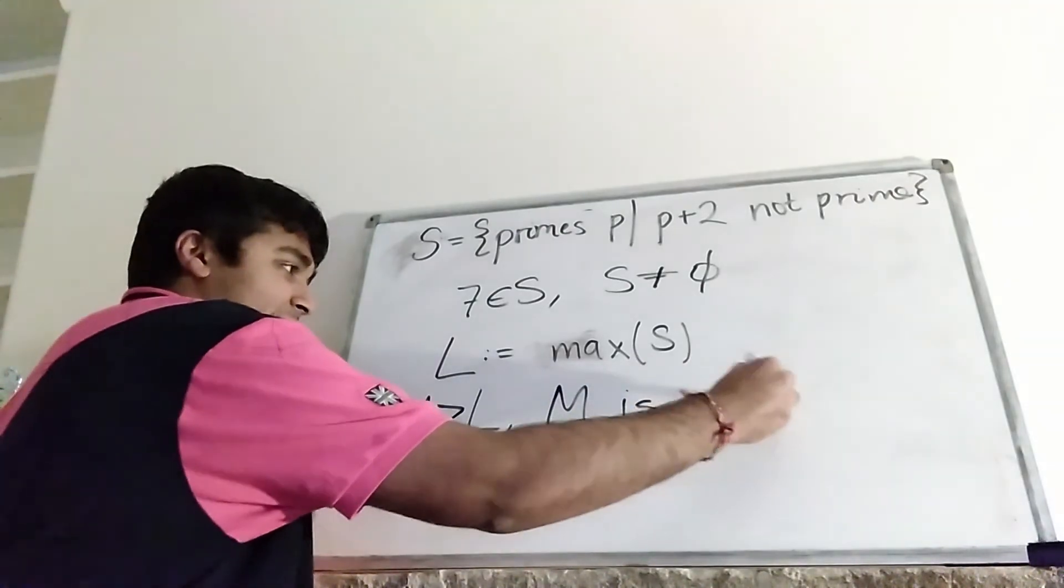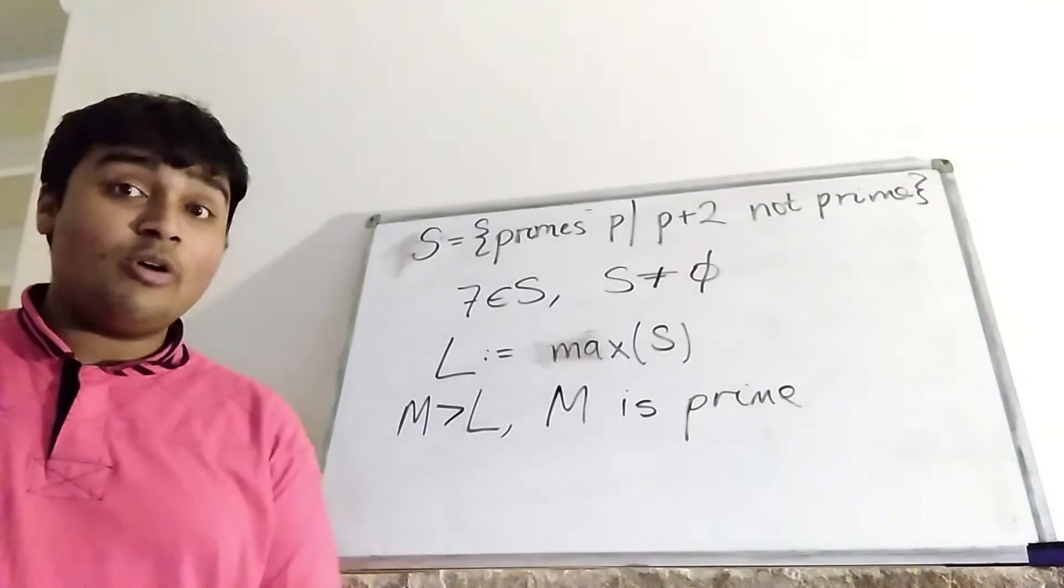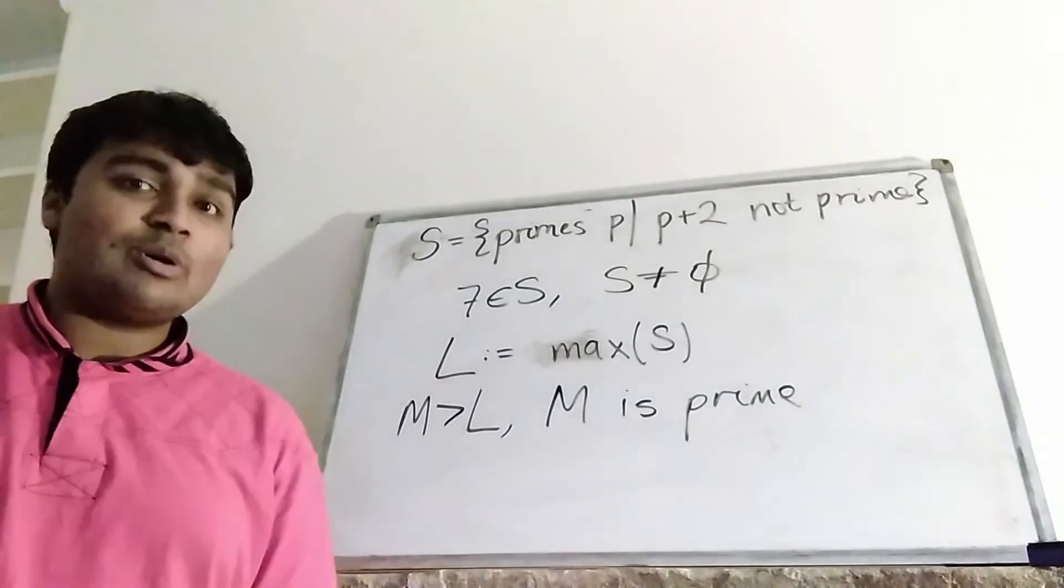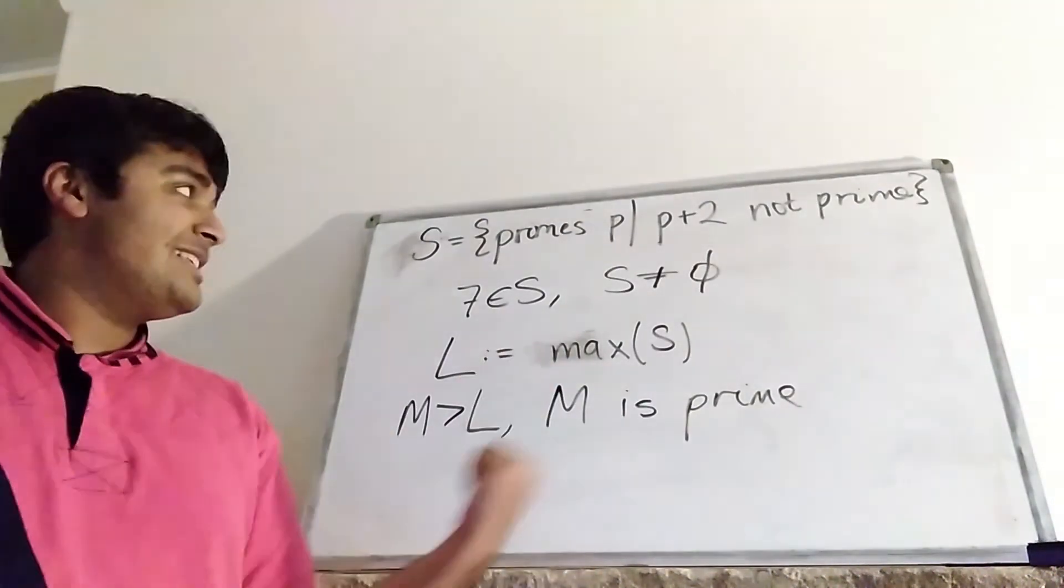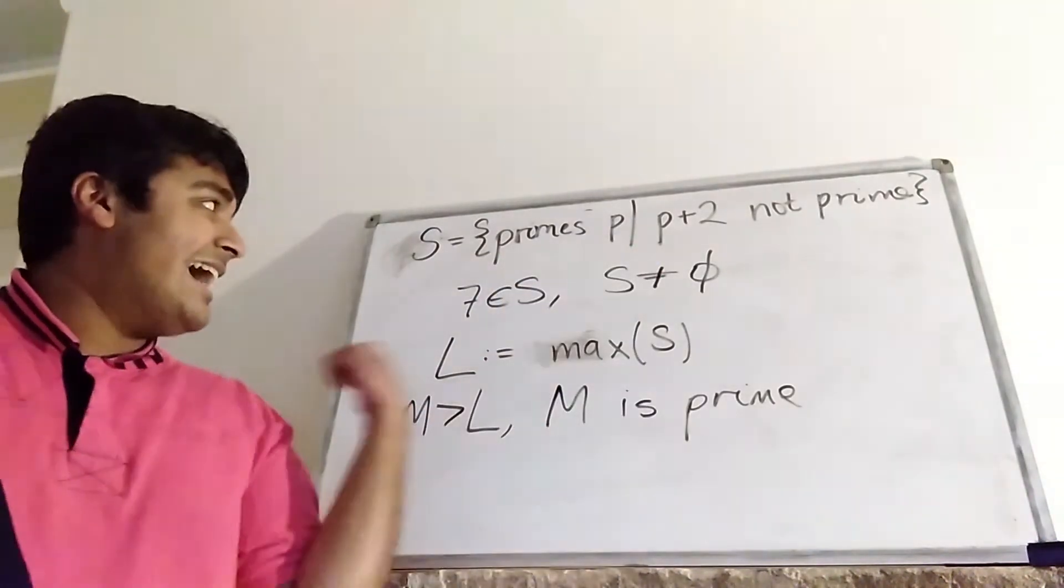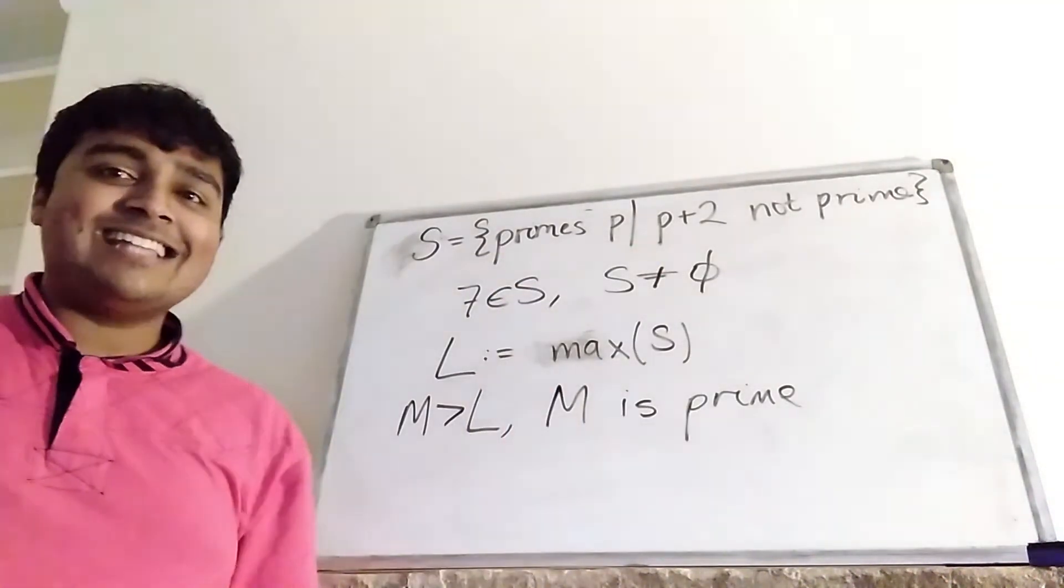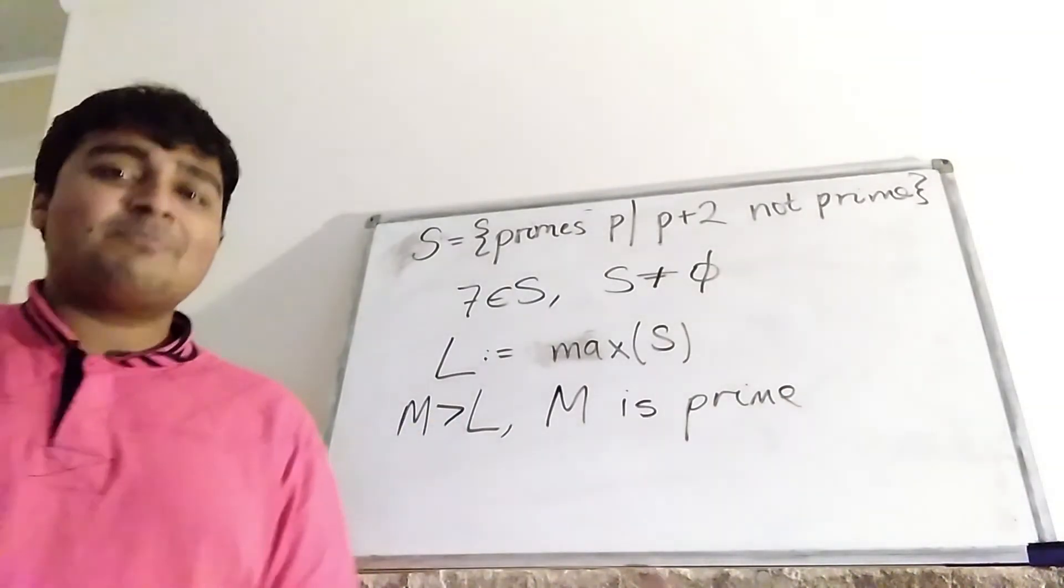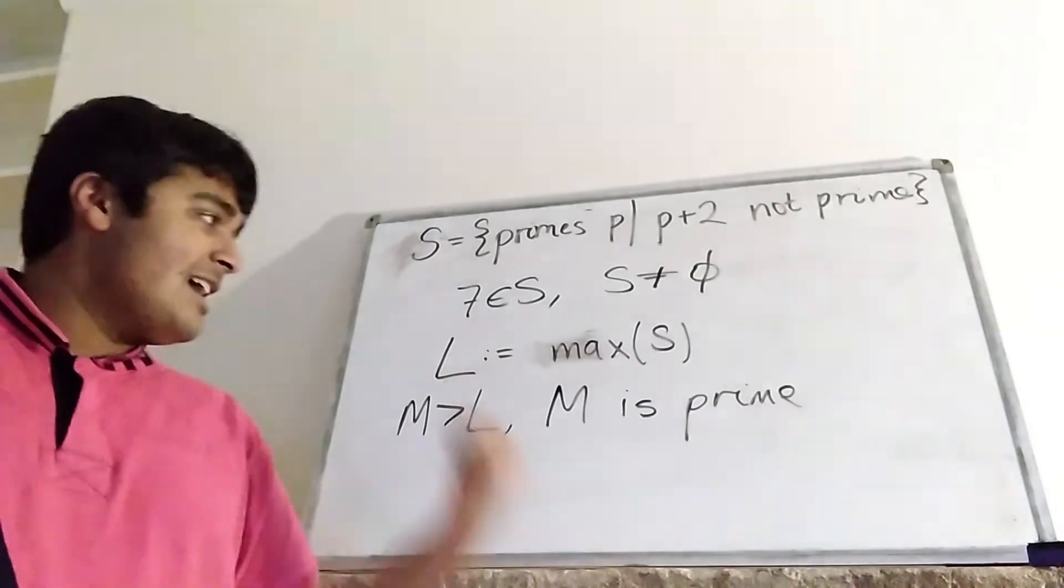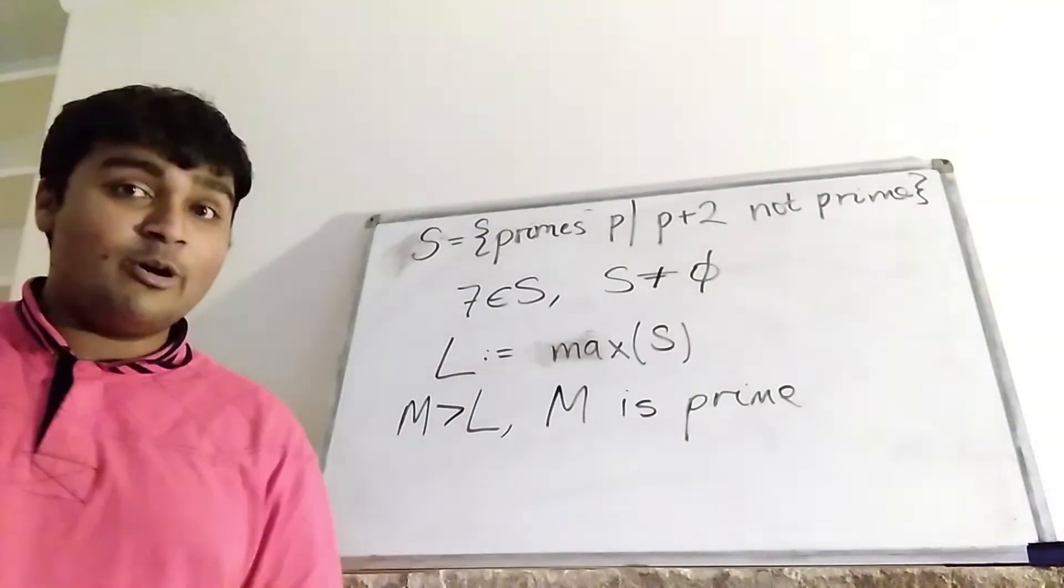Okay, now one sort of trivial thing I'm going to say is M must be odd, because obviously every prime number is odd except the number 2, and I argue that M can't be 2. Well, the reason M can't be 2 is because remember we have 7 is in this set here, and L is the largest element in this set here, so L must be at least 7. And because M is bigger than L, that means that M must be bigger than 7. So it certainly can't be 2. And because M is prime, it follows that M must be odd.